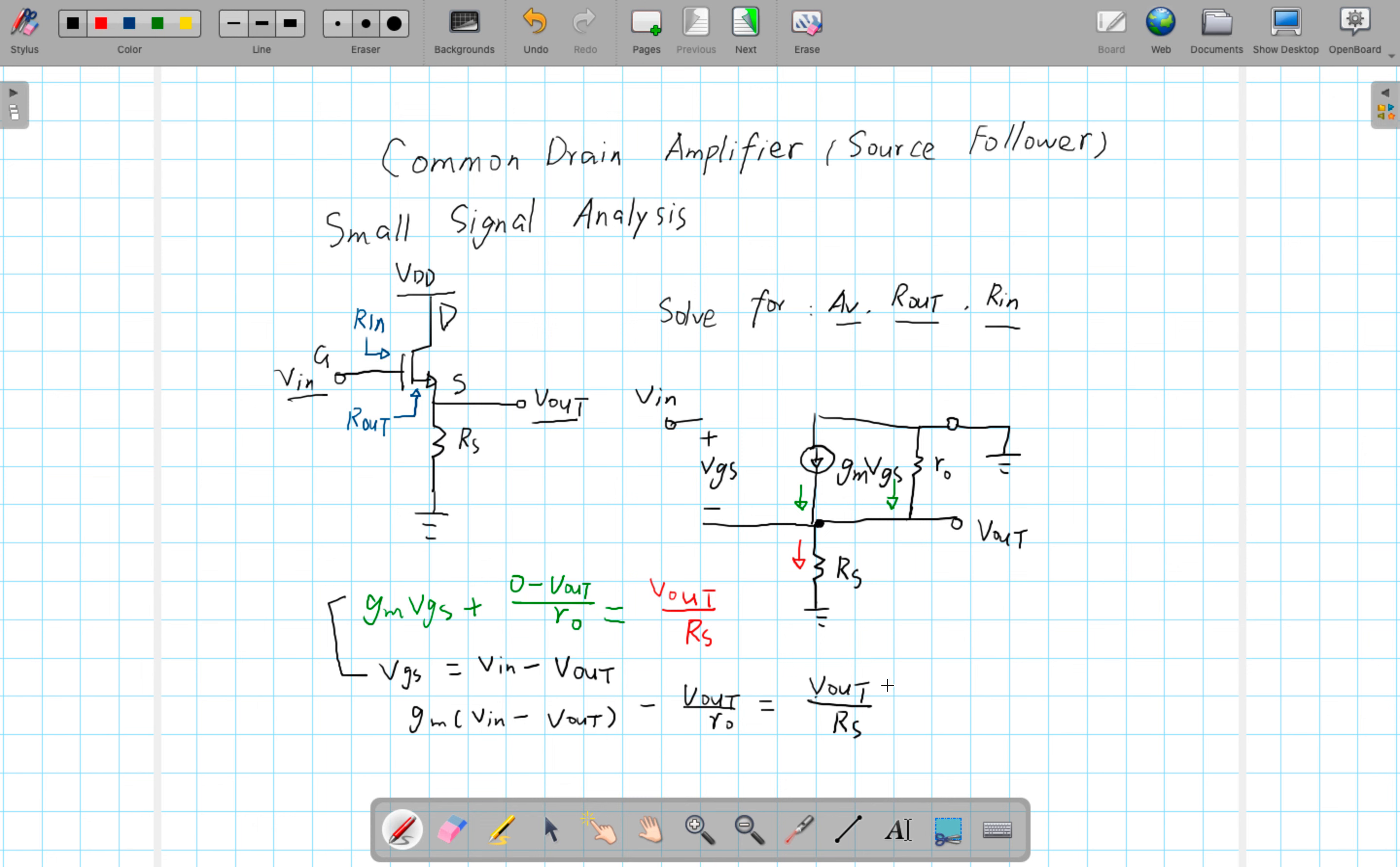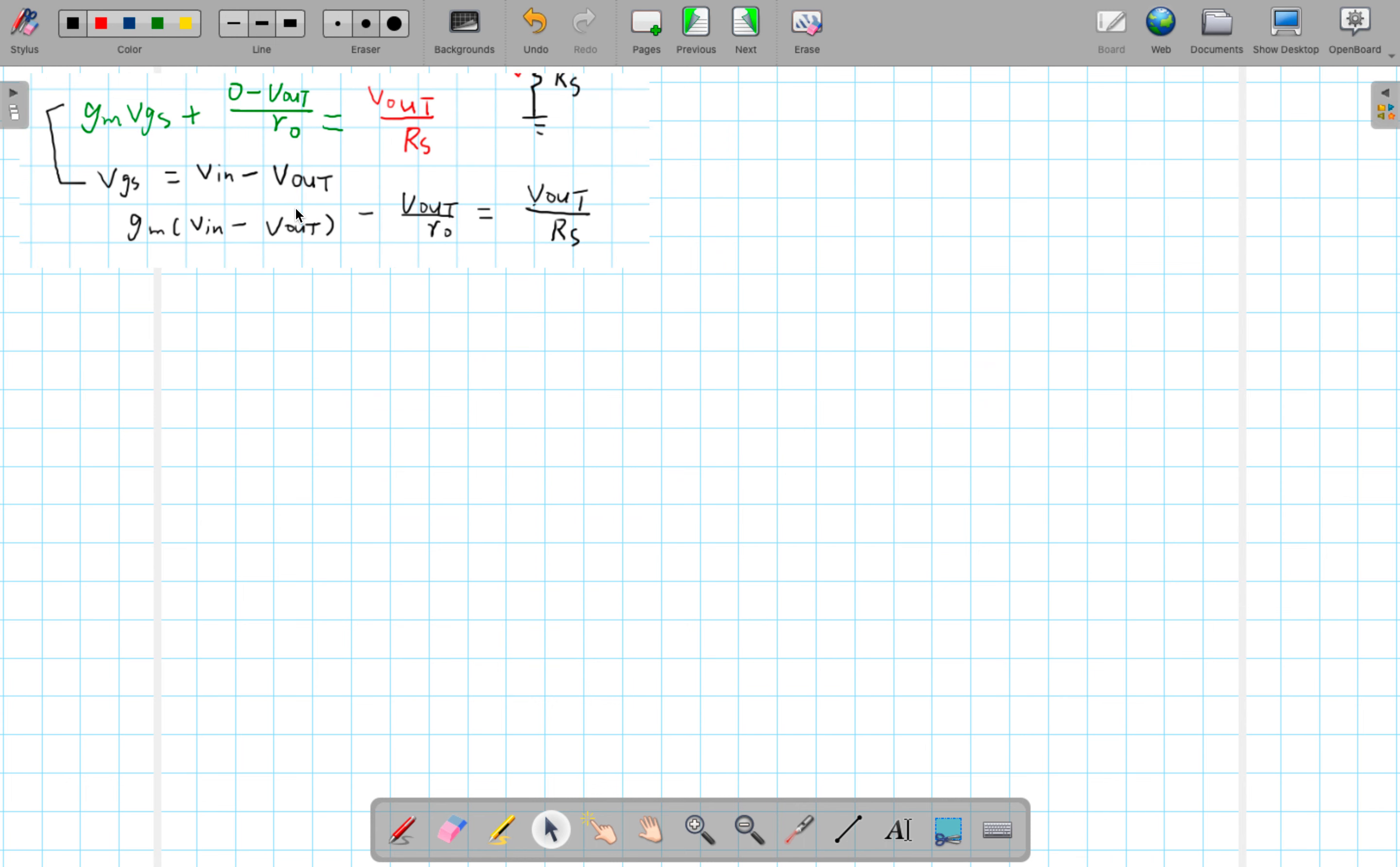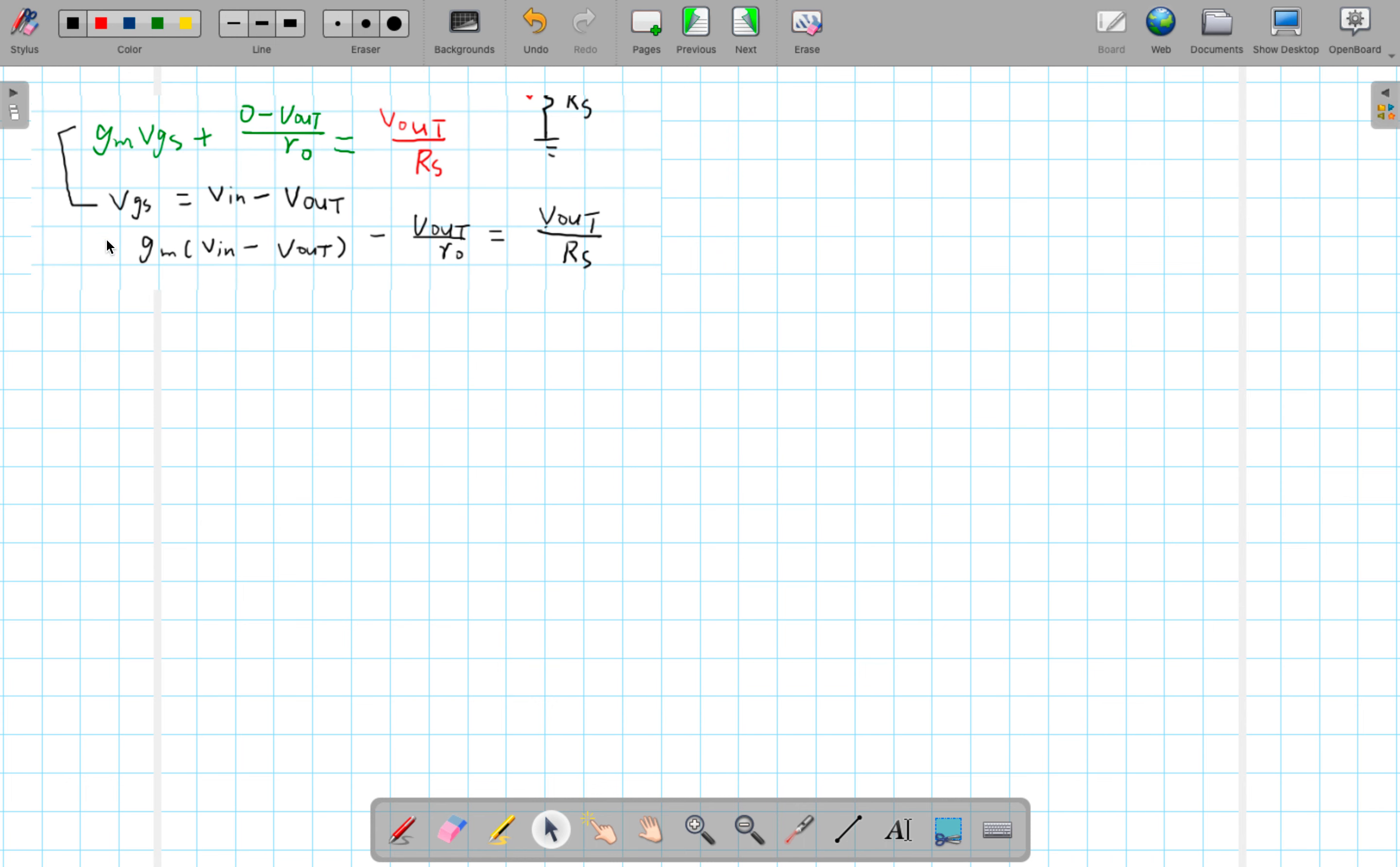GM times VIN minus Vout minus Vout over R0 equals to Vout over RS. And if we massage this equation a little bit. We can rewrite it as GM times V in minus GM times Vout minus Vout over R0 equals Vout over RS.